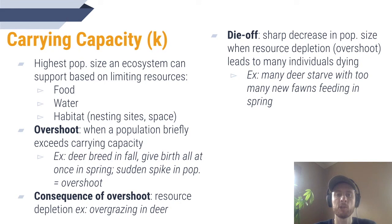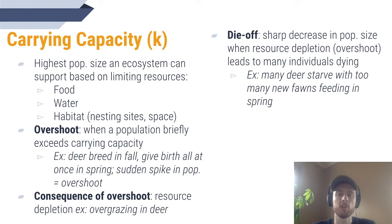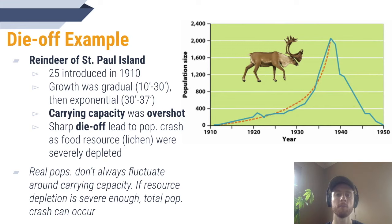An example of overshoot and die-off is the population cycle that large mammals like deer will sometimes follow. Since deer mate in the fall and give birth in the spring, there's a sudden and dramatic increase in the deer population each spring as the new fawns are added to the ecosystem. There are too many new fawns for the vegetation to support, so many deer struggle to find food resources and die off, which brings the population back below its carrying capacity.